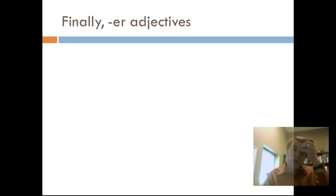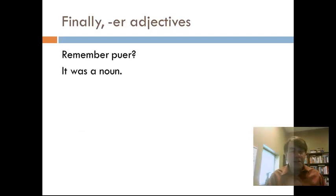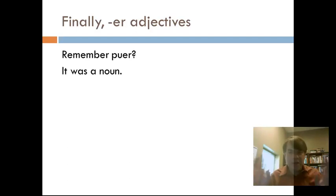A couple other things. Remember puer, the noun meaning 'boy'? It didn't have a -us ending in the nominative singular like amicus did. The good news is the nominative singular is the only weird form — the rest pretty much follows the same pattern. There are some adjectives that do the same thing. You would have pretty much caught it without realizing you caught it.